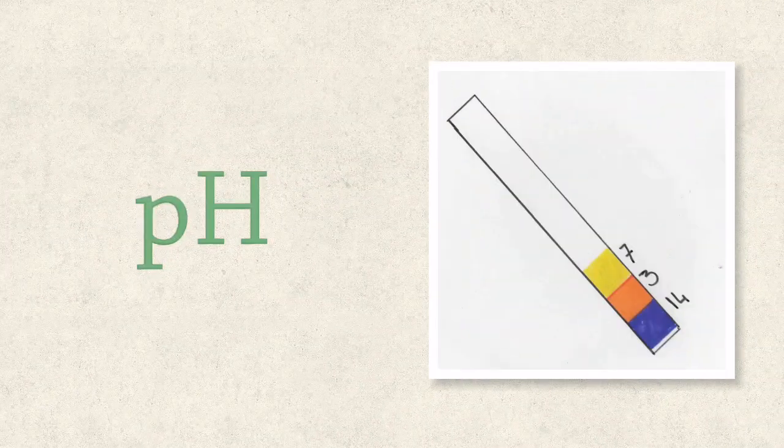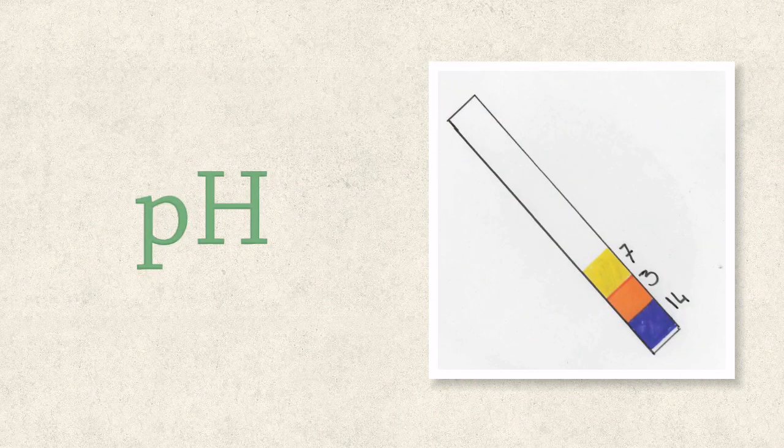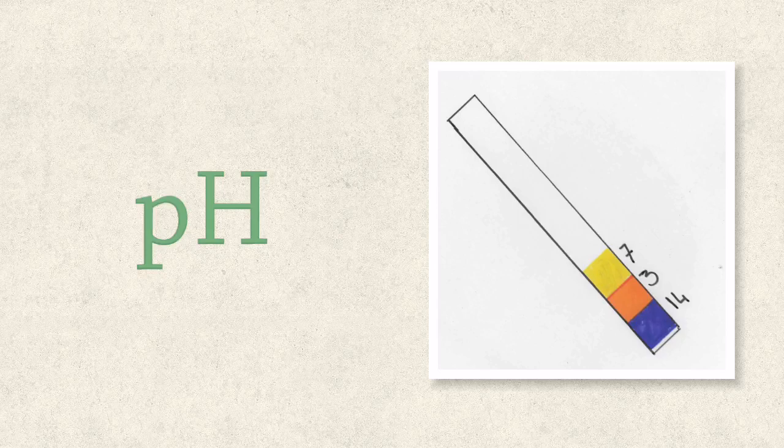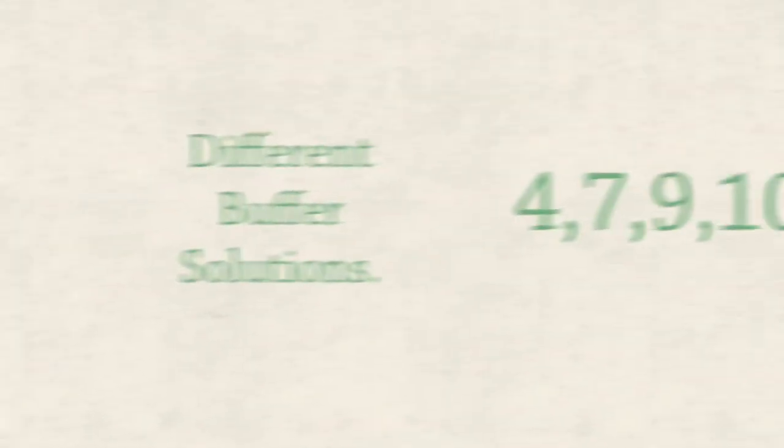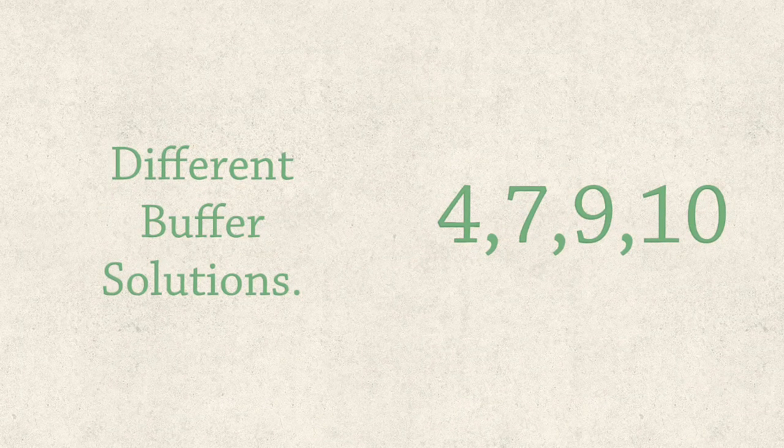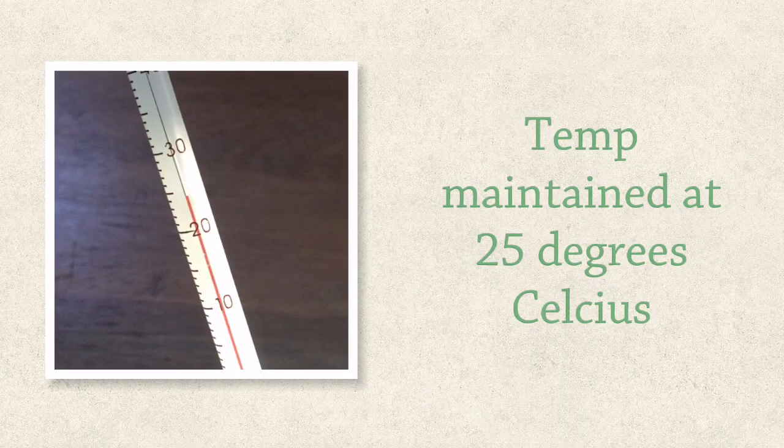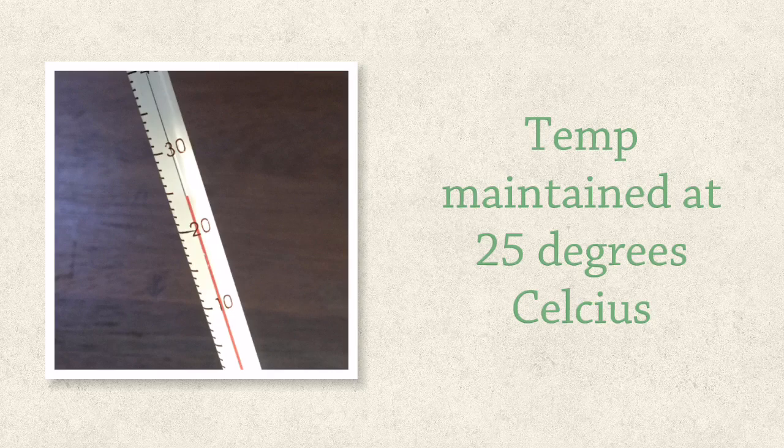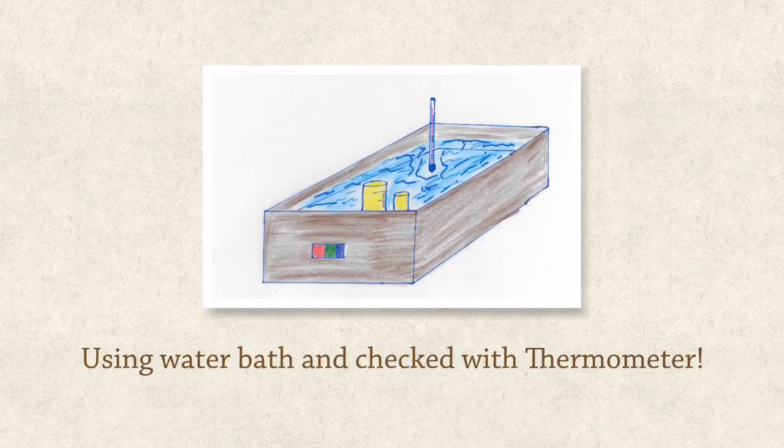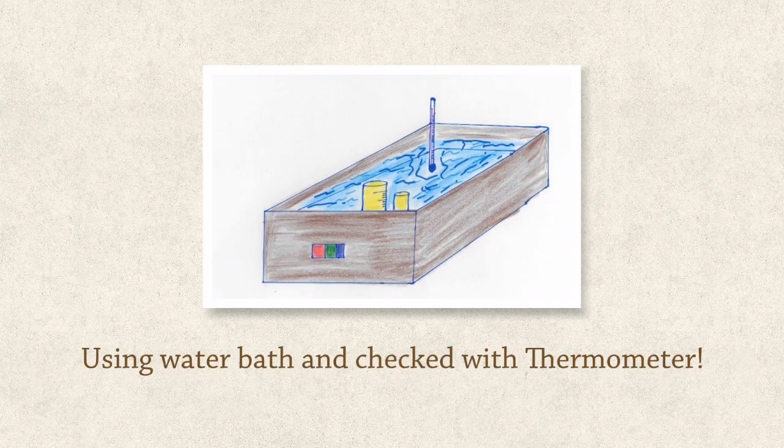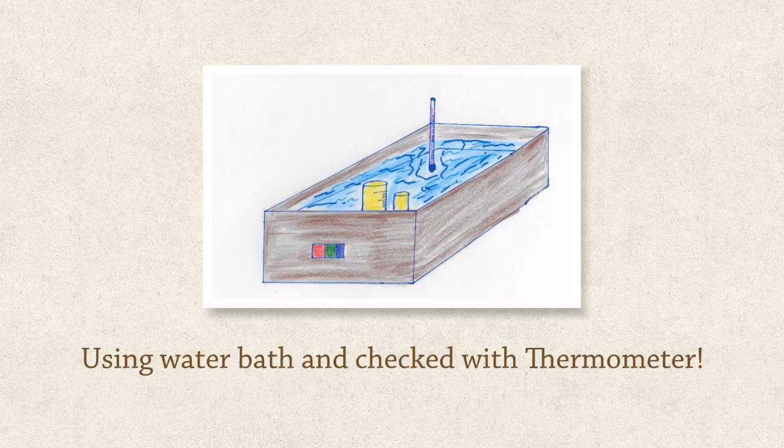Let's look now at pH and how changing or altering the pH affects catalase activity. To alter pH, you simply use a different buffer solution and we used 4, 7, 9 and 10. If you're varying or altering pH, then you have to maintain temperature and the temperature was maintained at 25 degrees Celsius, the optimum for catalase. Temperature was maintained using a water bath and that water bath was monitored using a thermometer.